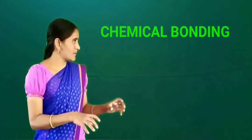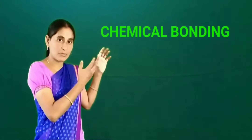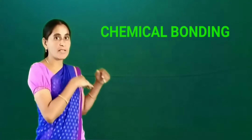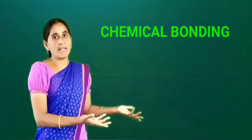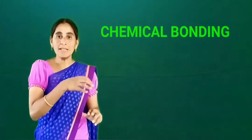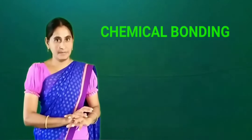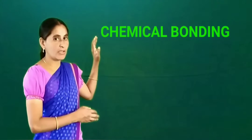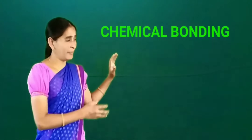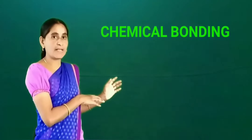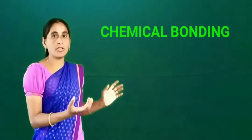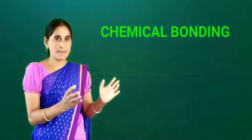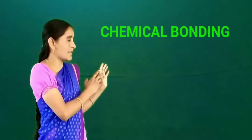Where there is a necessity to take or give electrons, that only will cause the formation of chemical bonding. The main motto of chemical bonding is whether an atom has to take electrons or give electrons to get stability. Let us go to one example, but before that we have to learn about the concept given by Sir Humphrey Davy.